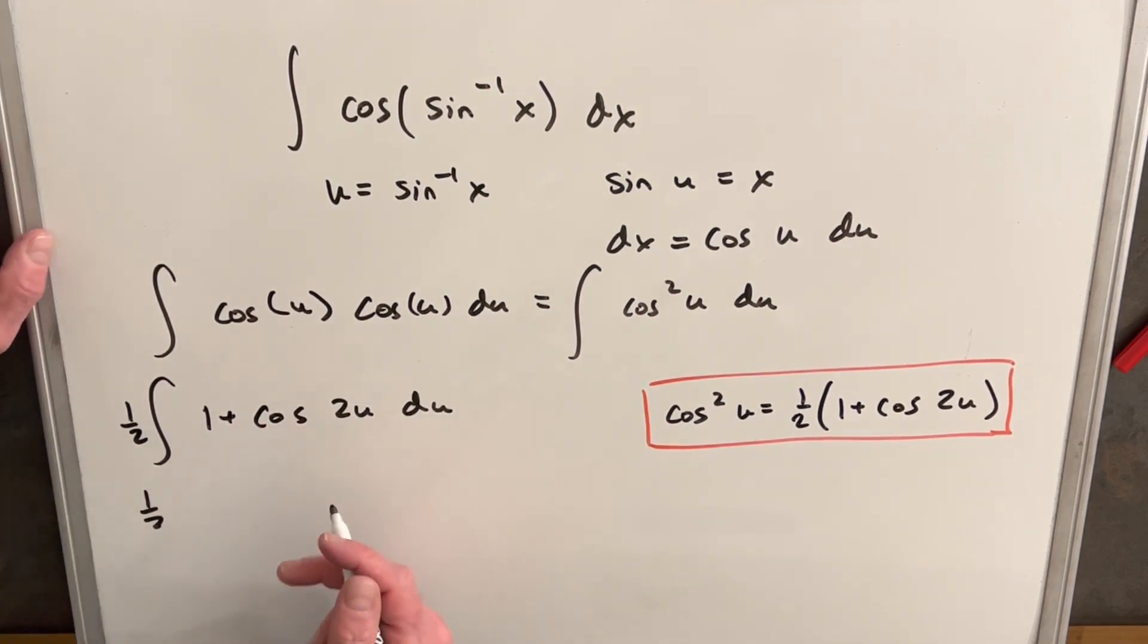Then we'll just integrate this real quick because this is easy. We're going to have integral of 1 is going to be u, and this piece is going to be 1 half sine of 2u.